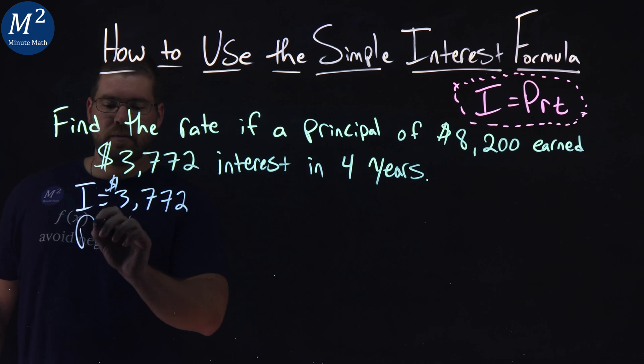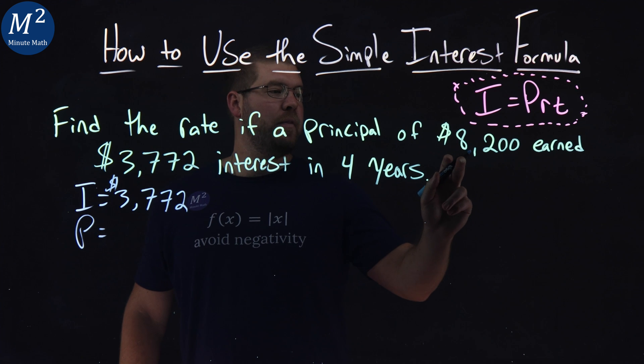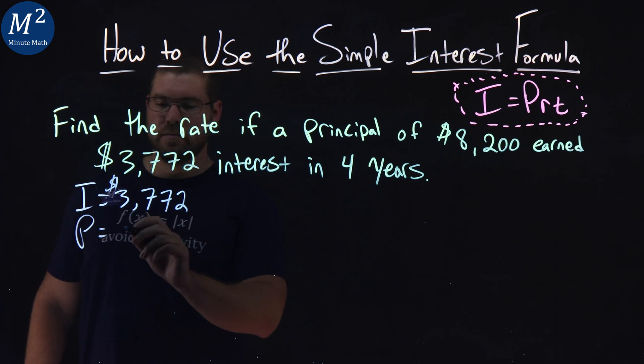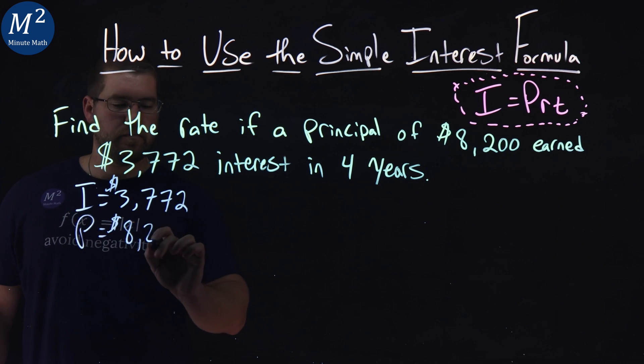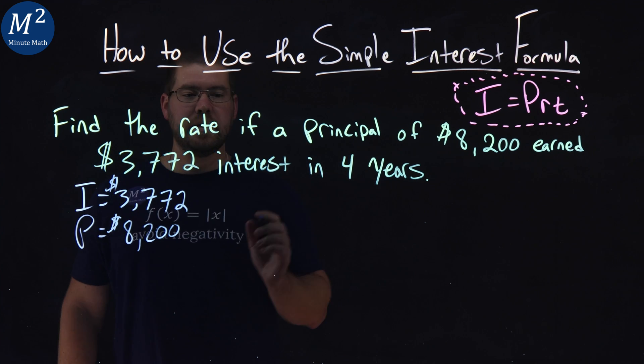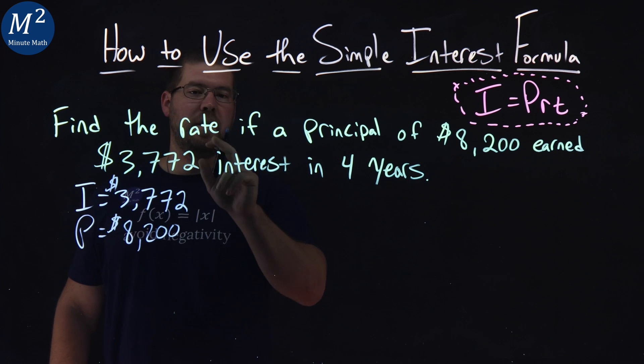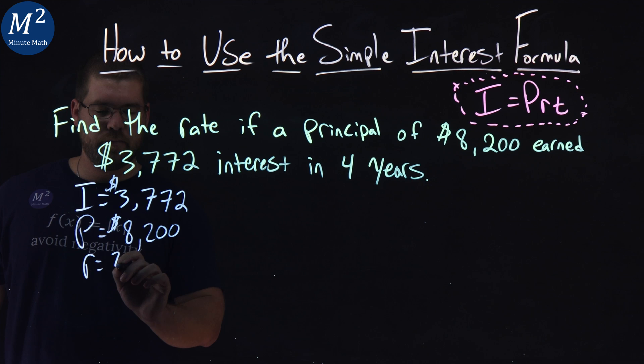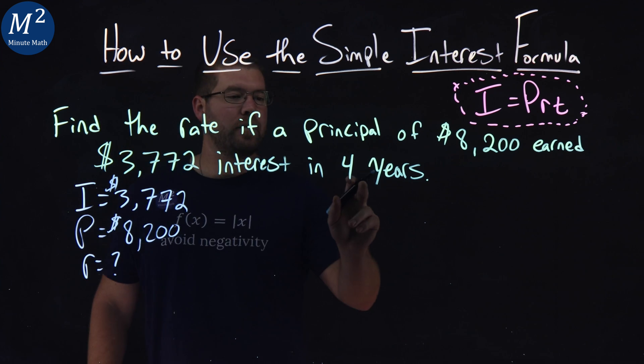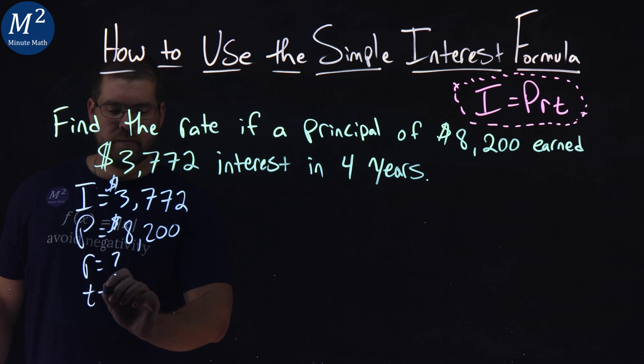Our principal amount, our initial amount, was $8,200. Our rate, we don't know what that is, that's what we're going to find. And our years, our time, is four years.